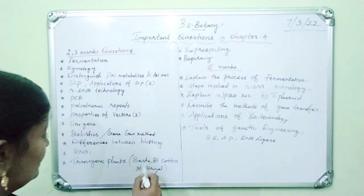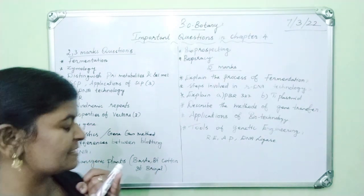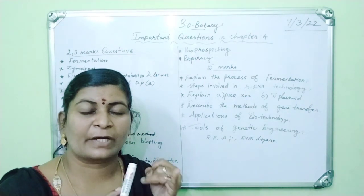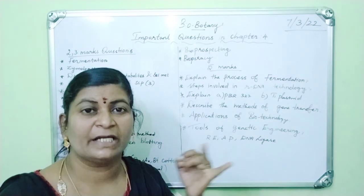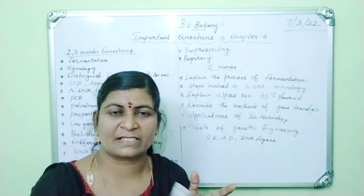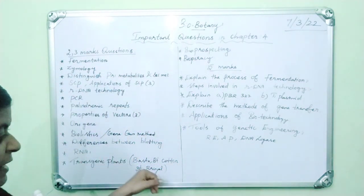Then transgenic plants. Transgenic plants, pasta, BT cotton. The advantages and disadvantages of BT cotton. These are all highly important questions. This question may be asked as three mark questions.